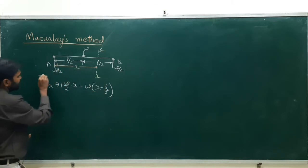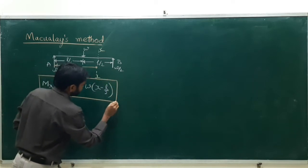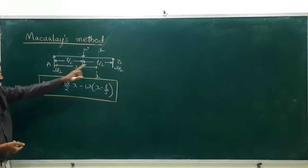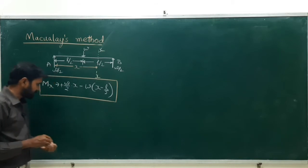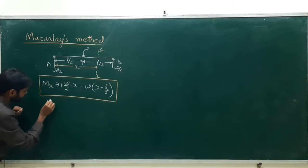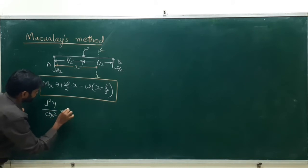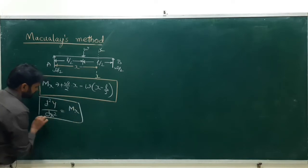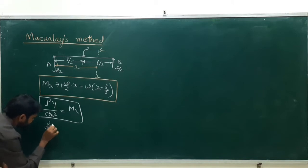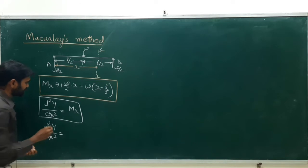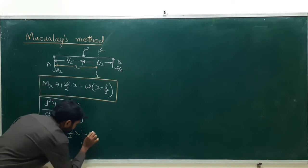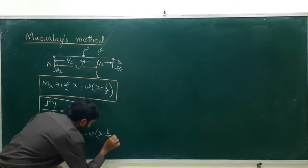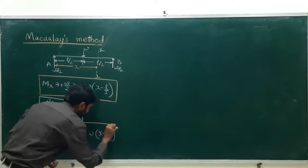The downward load gives minus W into (x − L/2). So my bending moment equation is: M(x) = W/2 · x − W · (x − L/2). According to Macaulay's method, this can be written as EI · d²y/dx² = W/2 · x − W · (x − L/2). This is my bending moment equation.